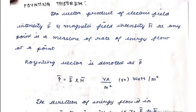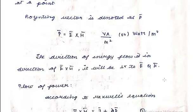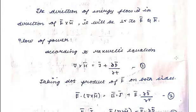We can state the theorem as: the vector product of electric field intensity E and magnetic field intensity H at any point is a measure of the rate of energy flow at that point. Mathematically it is expressed as P equals E cross H, and the unit of this is watts per meter square.